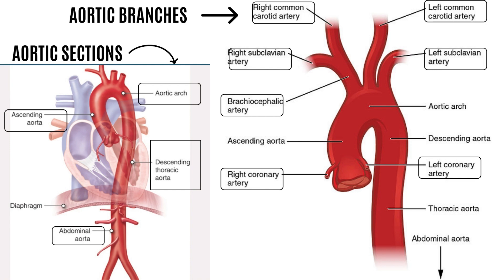After giving out the coronary arteries, the aorta then forms an arch. The aortic arch gives out three branches that supply the head, neck, and upper limbs. These are brachiocephalic trunk, left common carotid and the left subclavian.